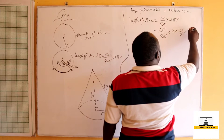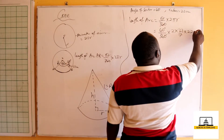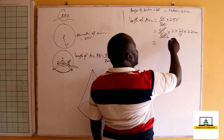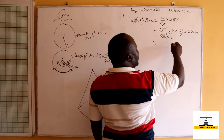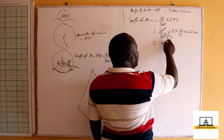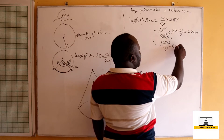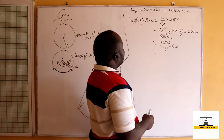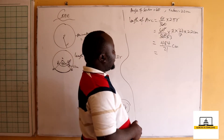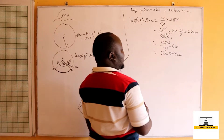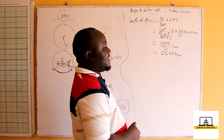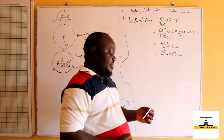Our radius is 22 centimeters. Simplifying: 6 and 2 cancel, 1 and 2 cancel, giving us 22 times 22 which is 484 over 21 centimeters. This gives us the length of arc equal to 484 over 21, which is approximately 23.047 centimeters.